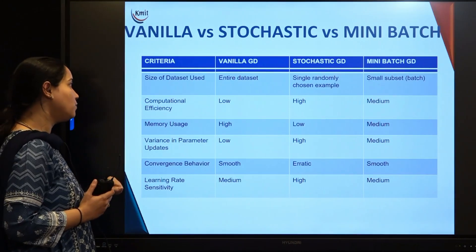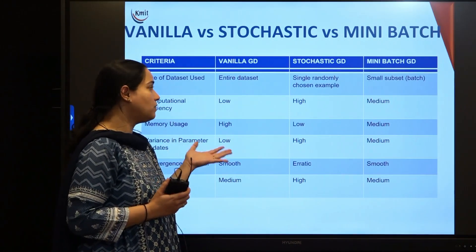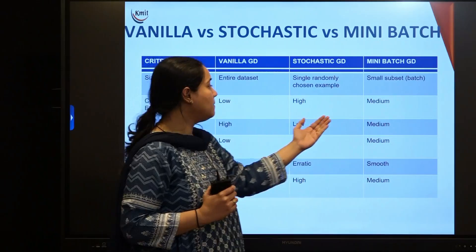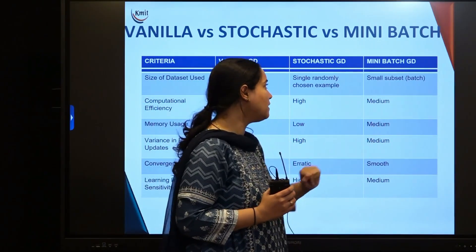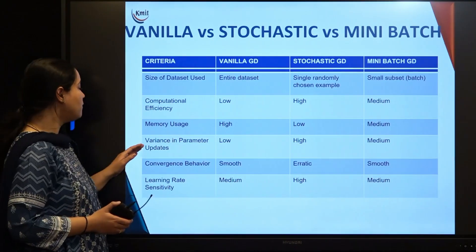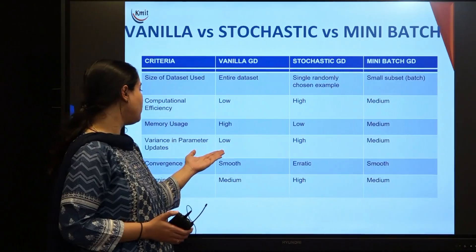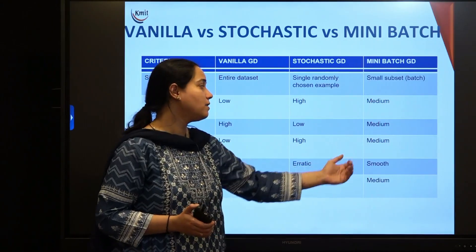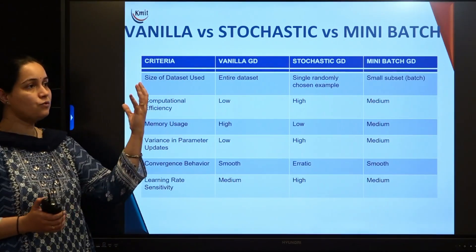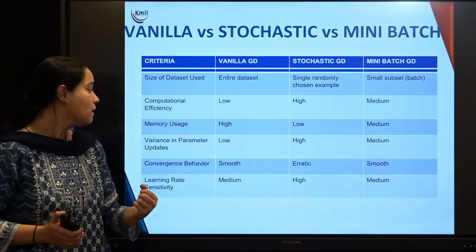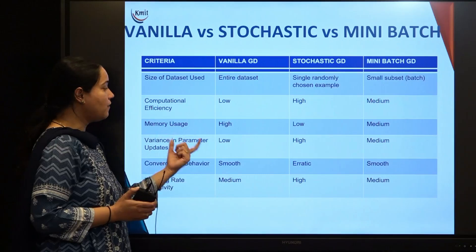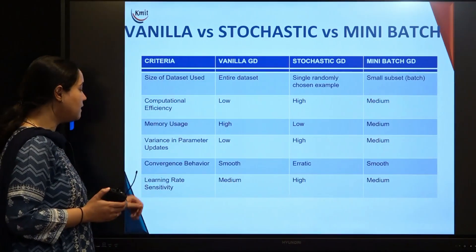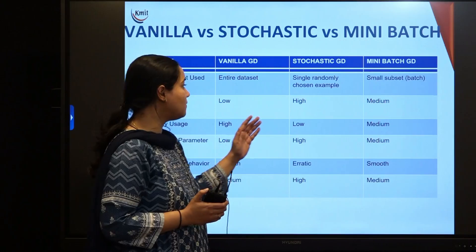For memory usage: vanilla uses high memory due to all samples, stochastic uses low memory, and mini-batch uses a medium amount due to smaller subsets. Variance in parameter updates is low for vanilla gradient descent, very high for stochastic, and medium for mini-batch. For convergence behavior — how quickly the algorithm reaches the minimum loss — vanilla shows smooth convergence, stochastic is very erratic, and mini-batch is again smooth.